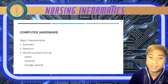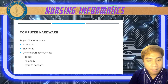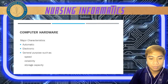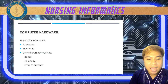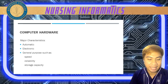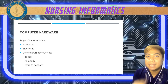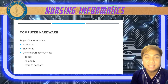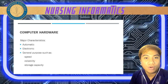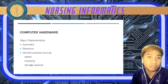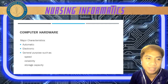General computer hardware characteristics also include speed, which is usually faster than a human being. We also have reliability — it is consistently good in quality or performance and is able to be trusted, especially when we give out information or data.